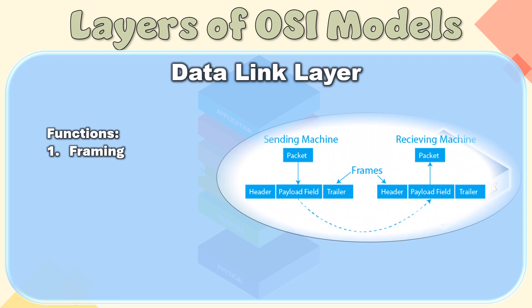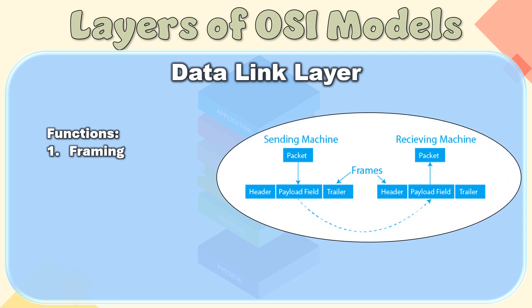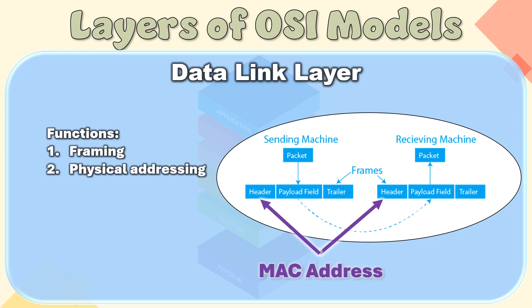Functions of the Data Link Layer. Framing: Framing is a function of the data link layer. It provides a way for a sender to transmit a set of bits that are meaningful to the receiver. This can be accomplished by attaching special bit patterns to the beginning and end of the frame. Physical Addressing: After creating frames, the data link layer adds physical addresses (MAC addresses) of the sender and/or receiver in the header of each frame.